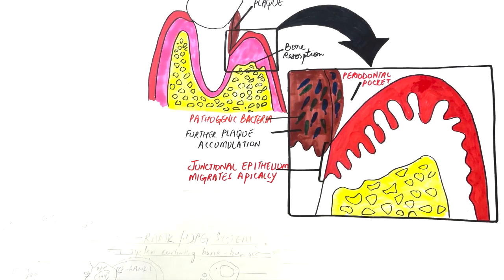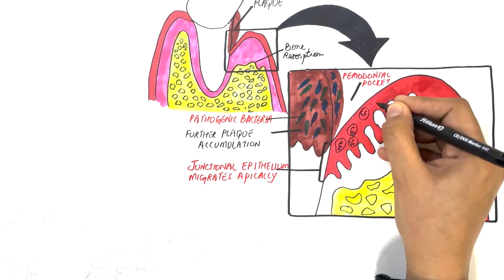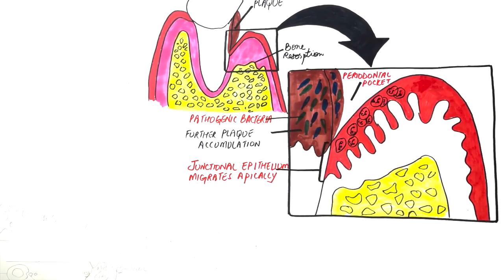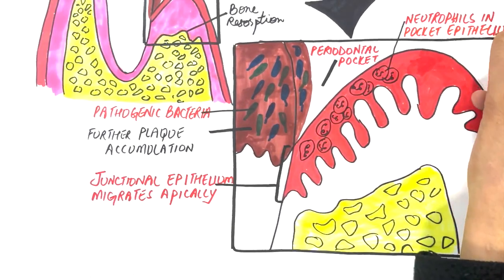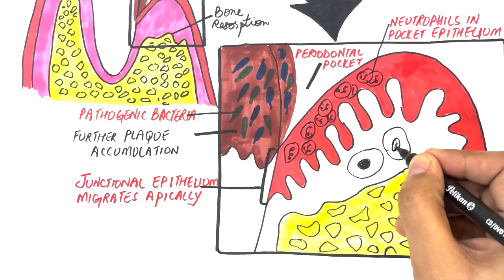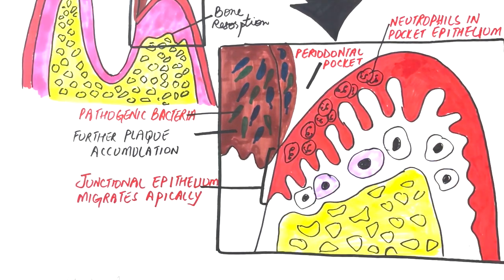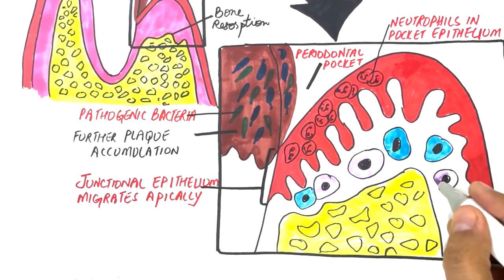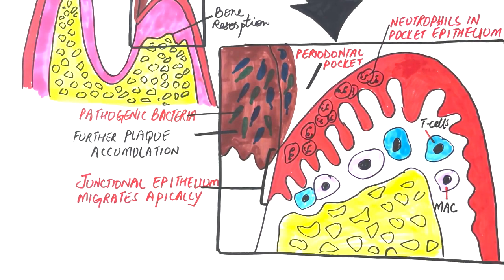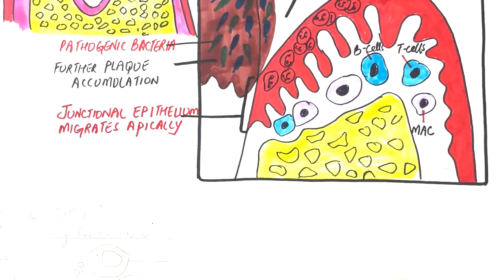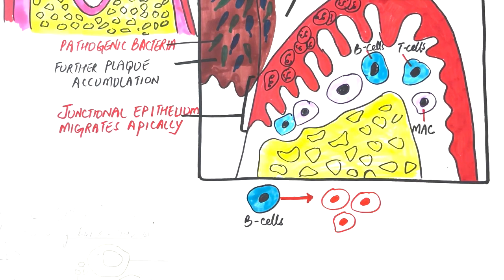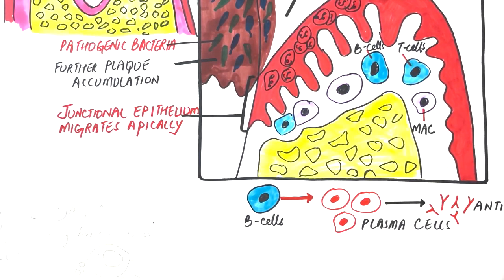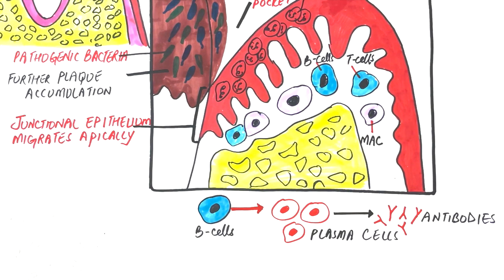The neutrophils predominate in the junctional epithelium and within the periodontal pocket. However, macrophages and B and T lymphocytes dominate in the underlying connective tissue. The B lymphocytes mature into plasma cells to produce antibodies, which then work along with the complement system to kill bacteria but finally end up destructing normal periodontal tissues.